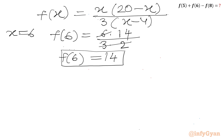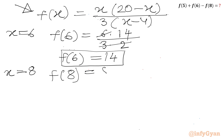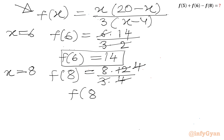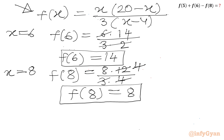Now we plug in x = 8 to get f(8): f(8) = 8·(20−8) / [3·(8−4)] = 8·12 / (3·4) = 96/12 = 8. So we have f(5) = 25, f(6) = 14, and f(8) = 8.